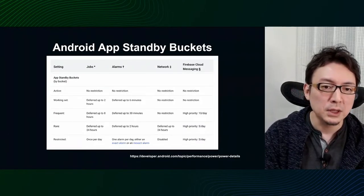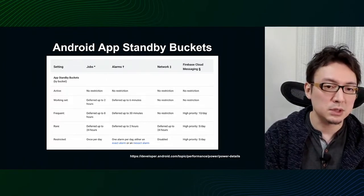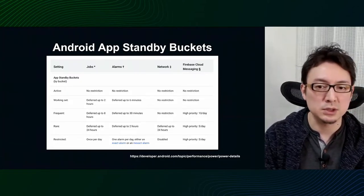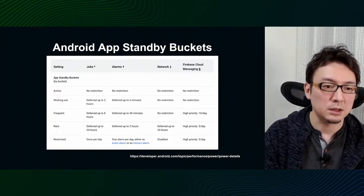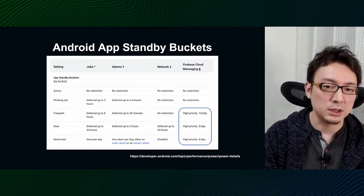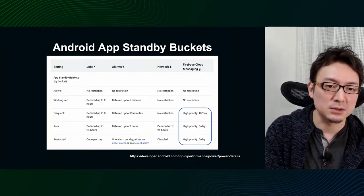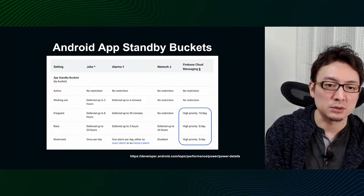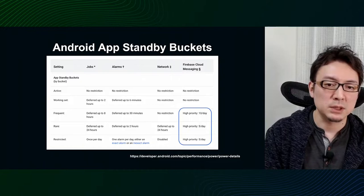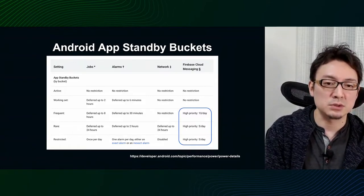So if it's set to high, is there no impact? Along with Doze, there is an Android OS feature called App Standby Bucket. The most frequently used is categorized as active, then working set, frequent, rare, and restricted — categorized by the OS. As for FCM, if an app is in the frequent bucket or below, the number of high-priority messages per day is restricted to 10 or 5, and if it goes beyond that, it will be downgraded to normal. Then it is affected by Doze, and notification will be delayed. If the application is not used very often, reducing the frequency of waking up the CPU by notifications to save battery life is actually the Android OS specification.